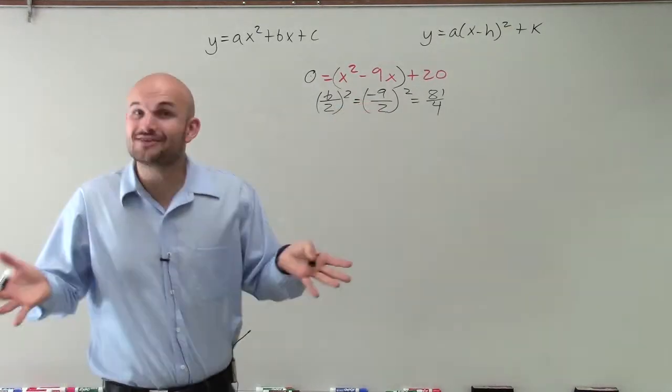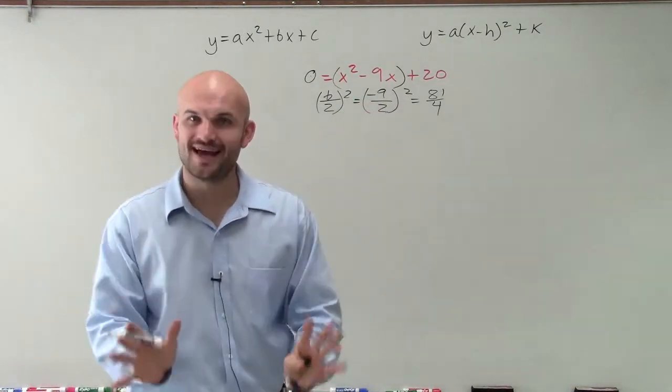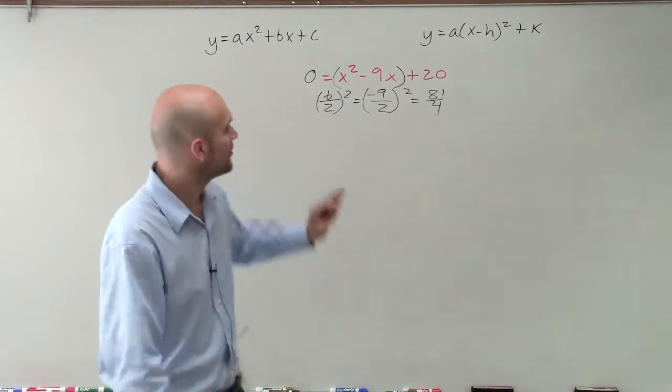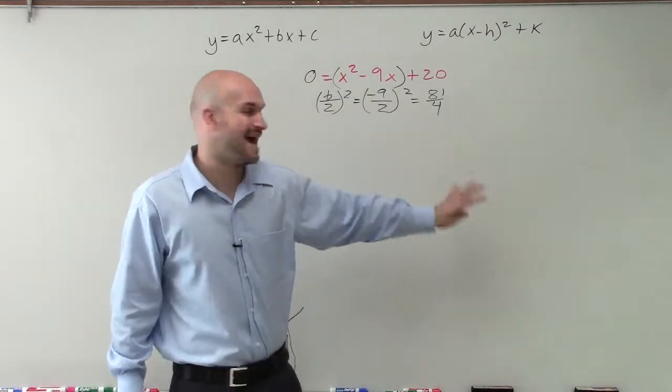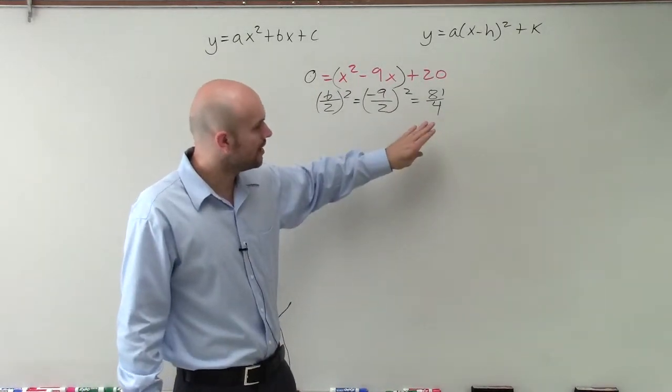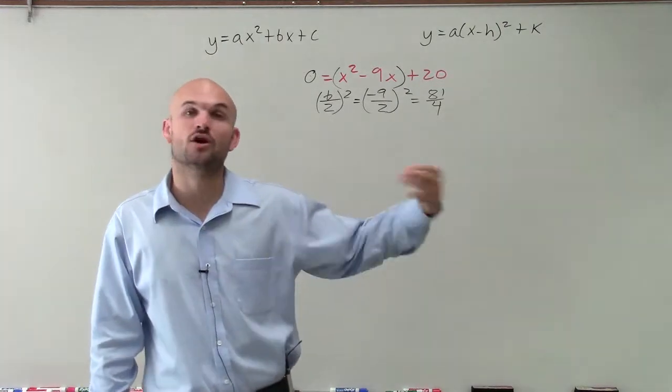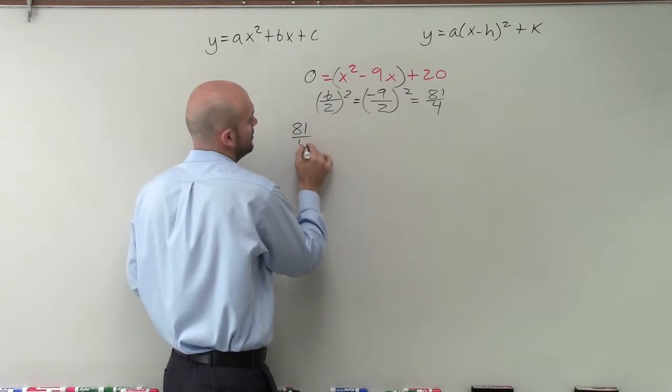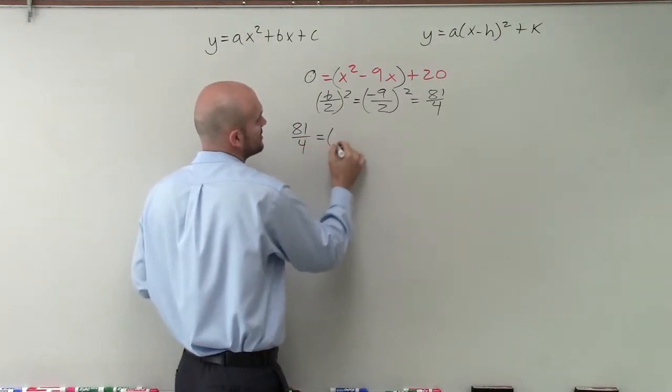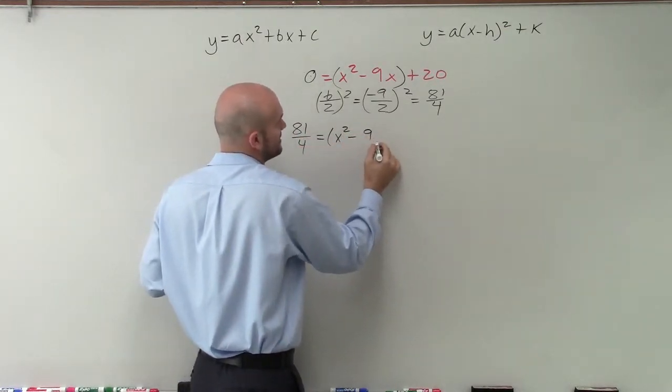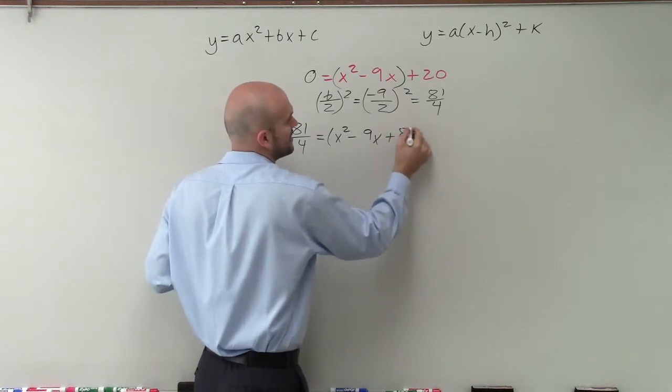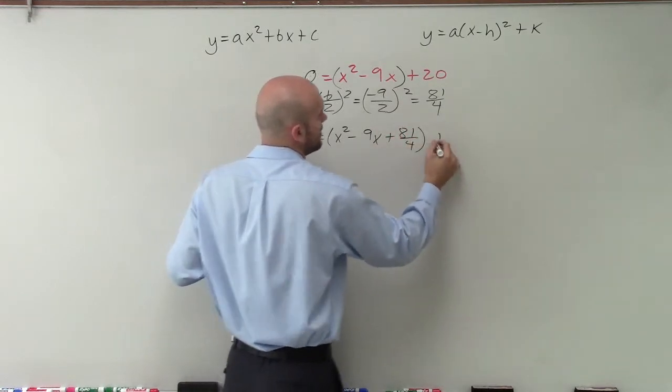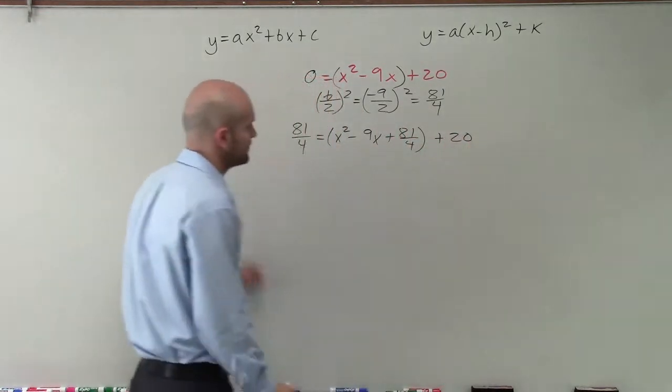So now I have 81 over 4, and it's a fraction. And I know it's OK. It's just a fraction. We're going to still apply the exact same process that we've done for all completing the square. We're going to add it to both sides. 81 over 4 plus 0 is 81 over 4 equals x squared minus 9x plus 81 over 4, and then we still have a plus 20 over here.